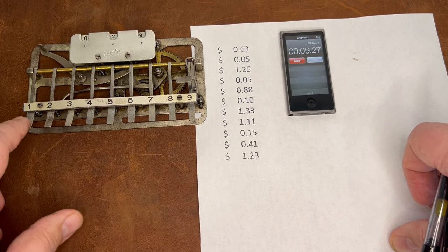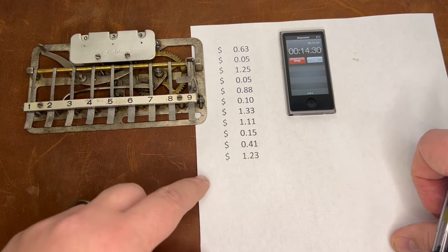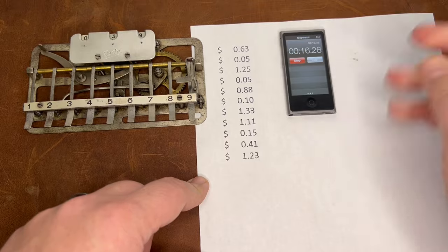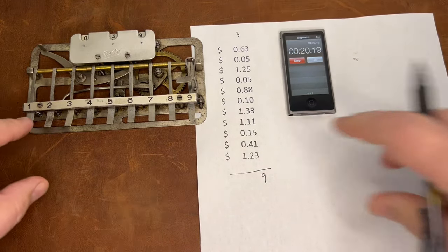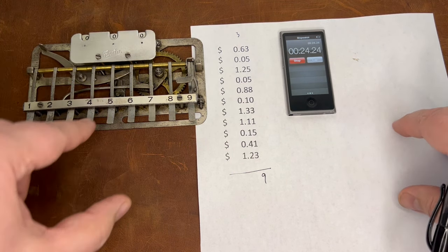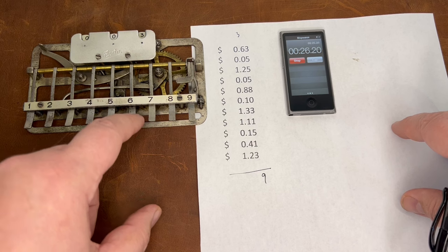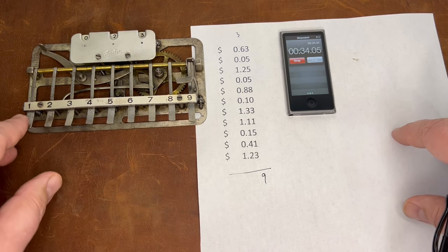Since there's no way to shift any carriage on this, when you add, you would add the ones column first, write down that total, before moving on to the 100s column. Of course, you've got to clear it in between every column. This has no subtraction, so any sane person wouldn't want to do anything but addition on this.